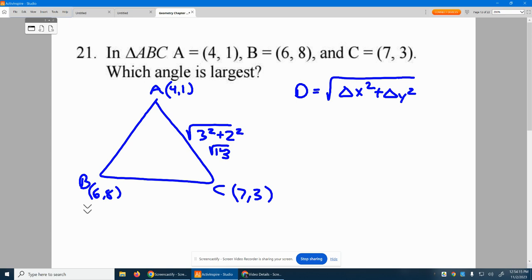Next, B to C, square root, 6 to 7 is 1 squared. 8 to 3 is 5 squared. So this is the square root of 26, because 1 plus 25 is 26. I don't need to know, I know 26 is bigger than 13, so I know so far this side is much larger.